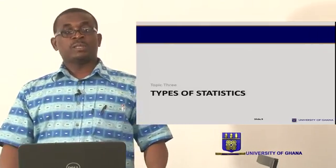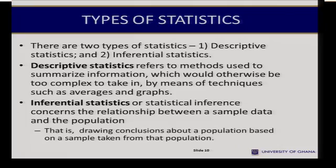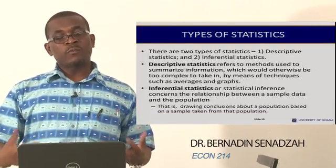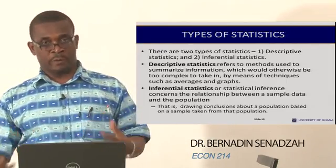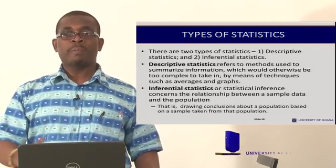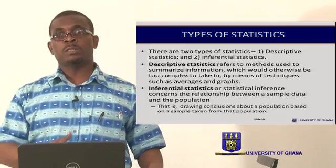We now turn our attention to the types of statistics. There are two types of statistics: descriptive statistics and inferential statistics. Descriptive statistics refers to the methods used to collect and summarize information, which will make it easily comprehensible. The form of summary measures could be graphical or numeric. For example, you can use graphical techniques like histograms and bar charts, but with numeric examples such as the mean, the mode, and the median, which are averages in essence.